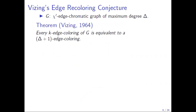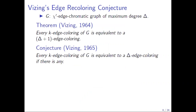What about Vizing's conjecture? Vizing's theorem says that starting from a k-edge coloring, you can reach a delta-plus-one edge coloring. His conjecture, stated one year later, says that starting from a k-edge coloring, you can actually reach a delta edge coloring if one exists. So if your graph is delta edge colorable, you can reach an optimal coloring starting from any k-edge coloring.